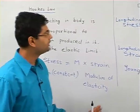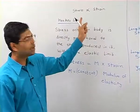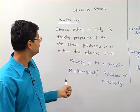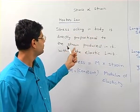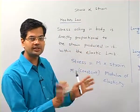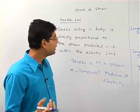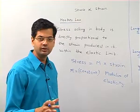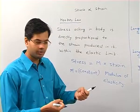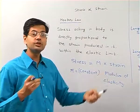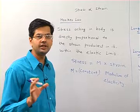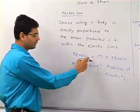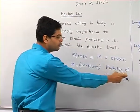In summary: Hooke's Law states that stress in a body is directly proportional to the strain produced in it within the elastic limit. After the elastic limit is crossed, the material may fail — for example, a rubber band stretched beyond its elastic limit will break. The constant of proportionality M is called the modulus of elasticity.